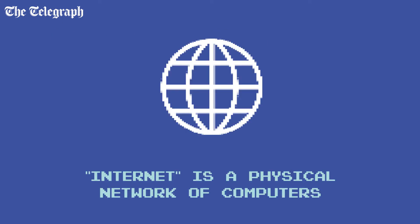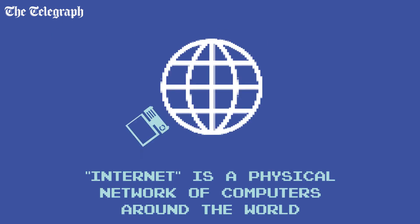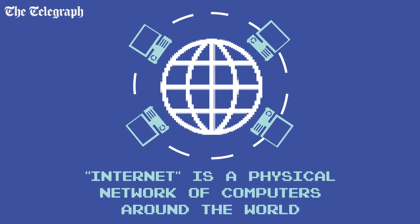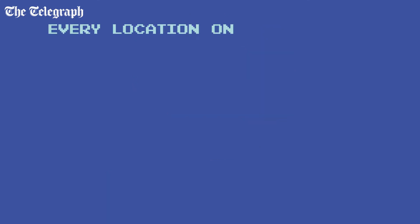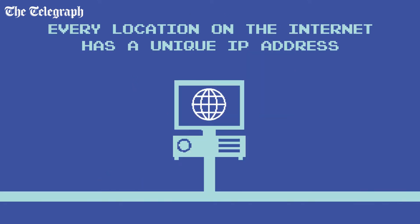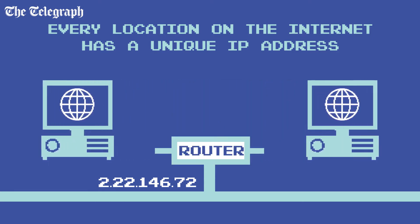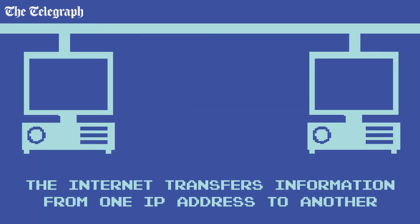The term internet describes a physical network of computers around the world, connected using the phone network, fibre optic cables, radio waves and satellite signals. Every physical location on the internet has a unique numerical address known as an IP address. One or multiple devices can use this address by connecting via a router. The internet's job is to carry information from one IP address to another via the global network of connected computers.